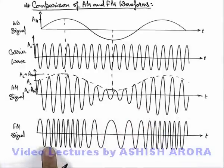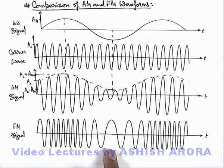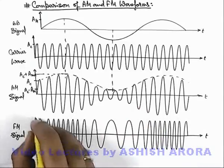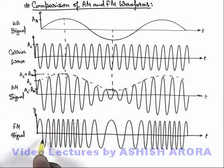And similarly, here in FM signal, here you can see, initially the frequency of this FM signal, frequency modulated wave, is omega c only.